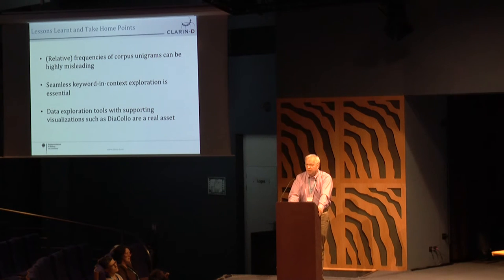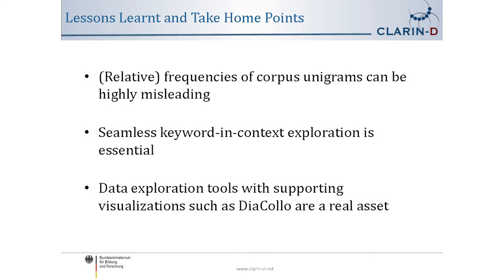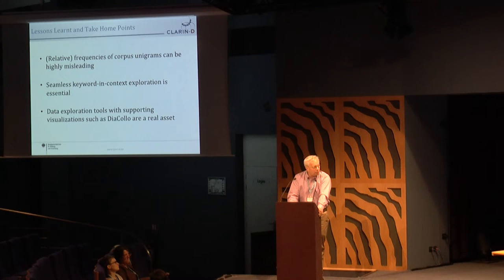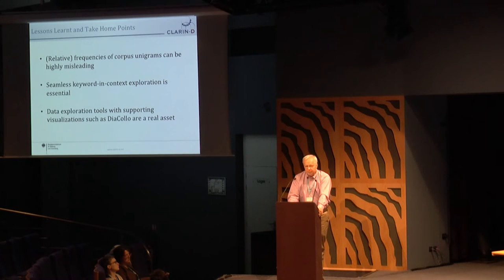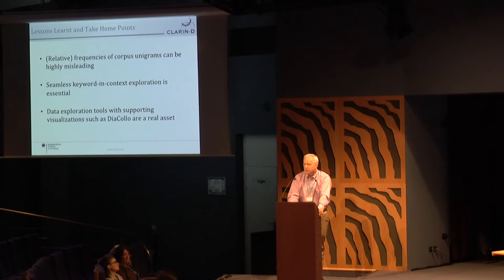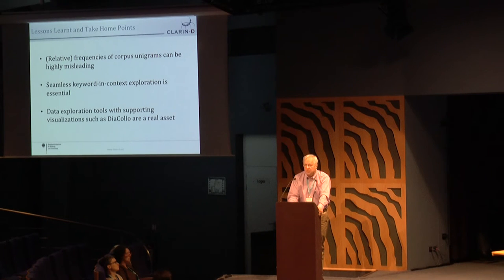A couple of lessons learned, since we are thinking of this as a use case: don't trust corpus unigrams, take a look at keyword in context, and look at collocation analysis. What's crucial in terms of functionality — and this is where Google Ngrams is unfortunately lacking — is seamless navigation from corpus occurrences to their context in terms of keyword and context. This is why we're needed, and why Google Ngrams, although it has a very good ngram viewer, doesn't quite suffice for our purposes.